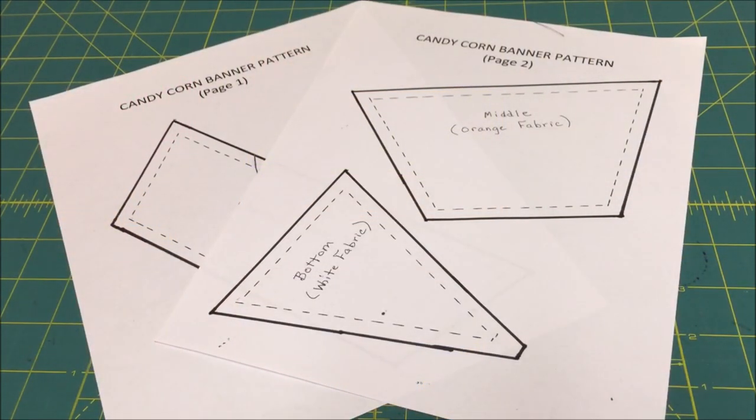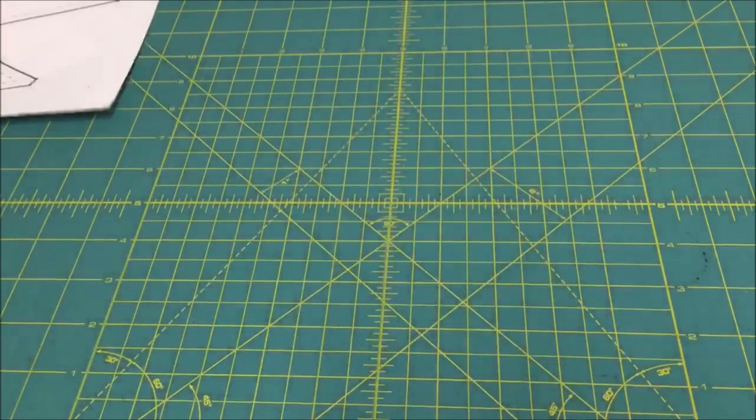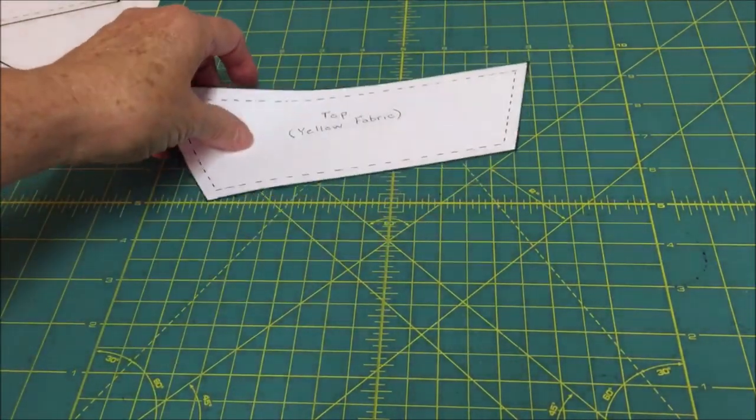Go to our candy corn banner page to download and print the two pattern sheets. We will have a link in the video and description section below to the page. Once you have downloaded the patterns, then cut them out.